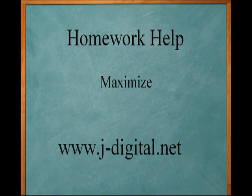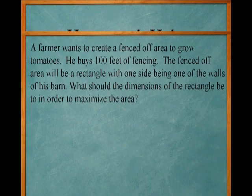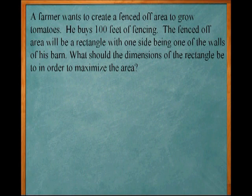In this problem, we'll deal with maximizing an equation. The farmer wants to create a fenced-off area to grow tomatoes. He buys 100 feet of fencing. The fenced-off area will be a rectangle with one side being one of the walls of his barn.